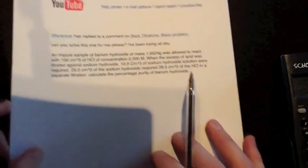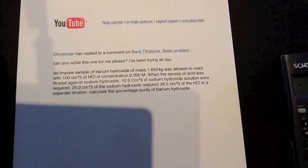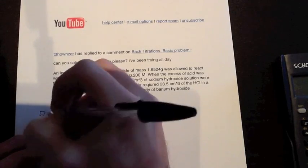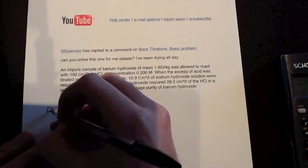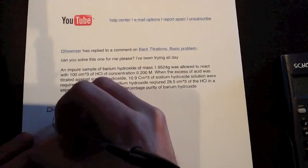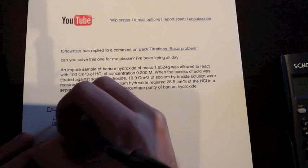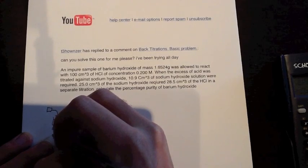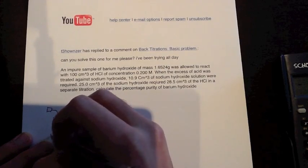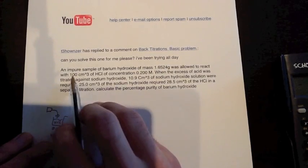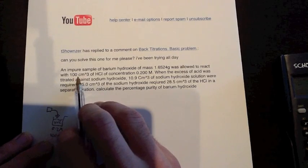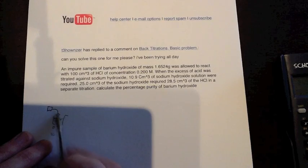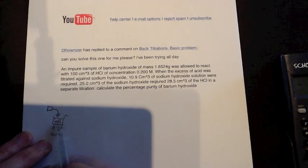Alright, so let's have a look at what's going on here. First of all I'm going to draw a little diagram, a little flow chart of what's happening. So I've got my sample of barium hydroxide here. I'm going to add that into a beaker of HCl, which is 0.2 molar and it is 100 mL, because 100 mL is the same as 100 centimeters cubed. So there you go, my barium hydroxide is going in there, my impure barium hydroxide is going in there.